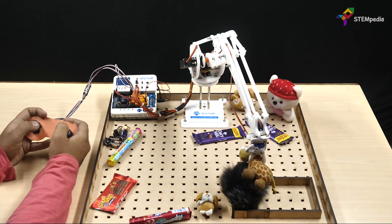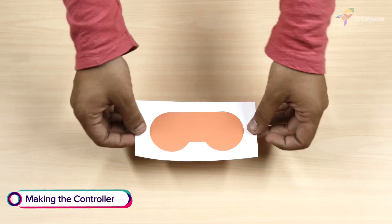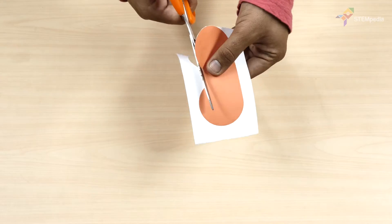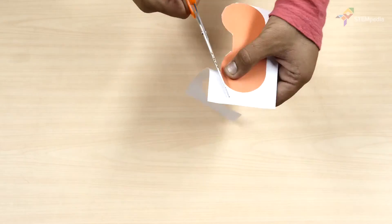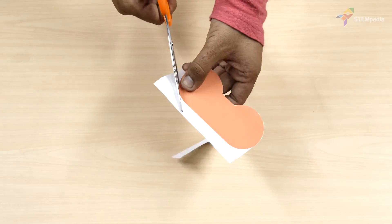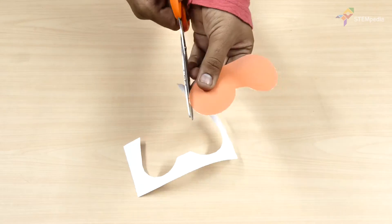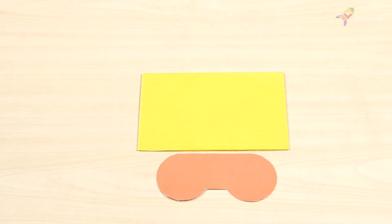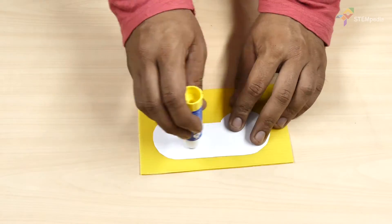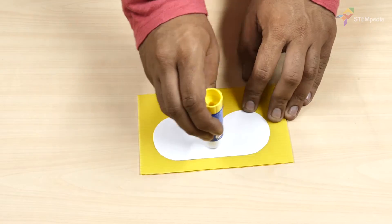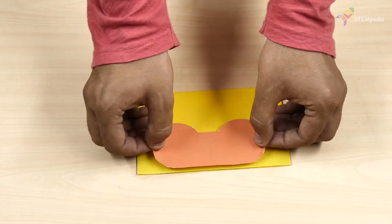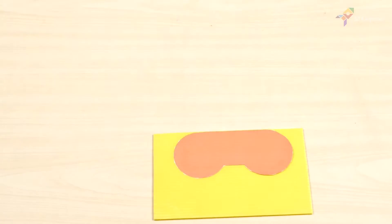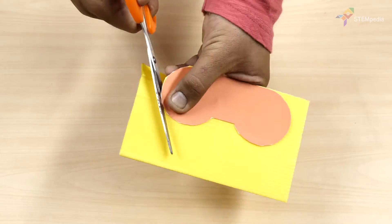Let's begin by making the controller. First, take a printout of the controller and cut it out. Now take the cutout and paste it on the top of a corrugated sheet to make it sturdy. Then, cut it out from the sheet.